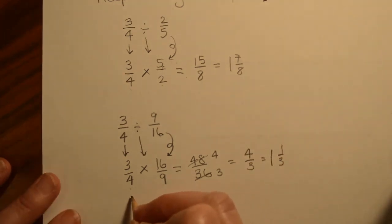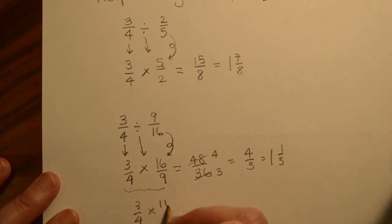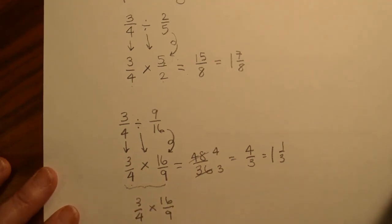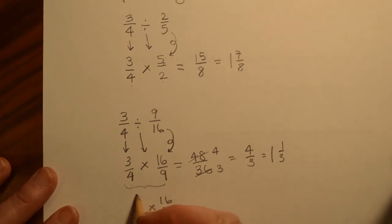Or let me do it again. I'm just going to rewrite this. 3/4 times 16/9. We could cancel first. Again, we could say, oh, I noticed that in this 3 and the 9, that there is a 3. So 3 goes into 3 once. 3 goes into 9 three times.